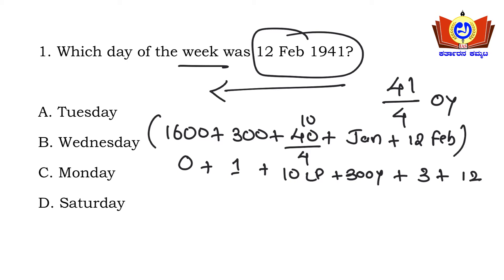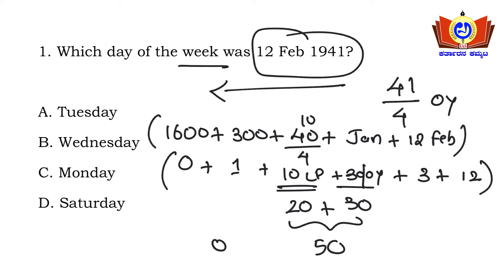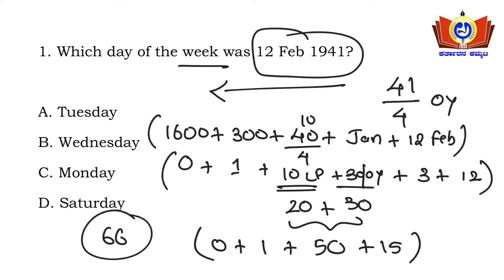12th February gives 12 days. For 10 leap years: 2 odd days each, so 20. For 30 ordinary years: 1 odd day each, so 30. Total: 0 + 1 + 30 + 20 + 3 + 12 = 66 odd days. Now divide 66 by 7.